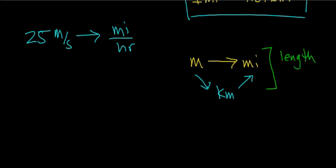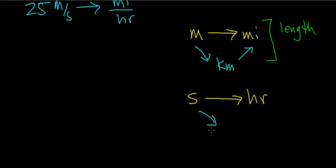Our next strategy is to convert units of seconds over to units of hours. I don't know a direct relationship between seconds and hours, although once you do enough of these problems you'll eventually see there are 3,600 seconds in one hour. But I do know a relationship between seconds and minutes, and then a relationship between minutes and hours. This will be our time conversion.